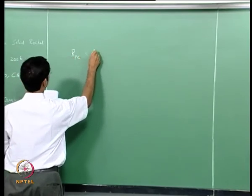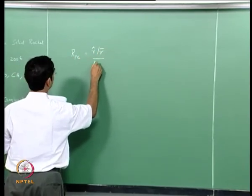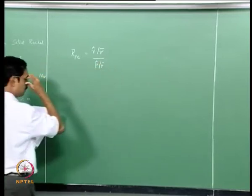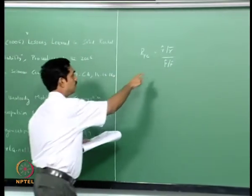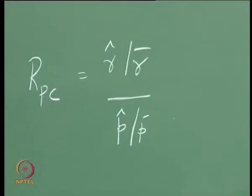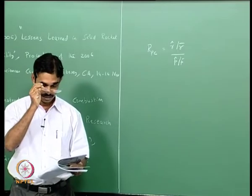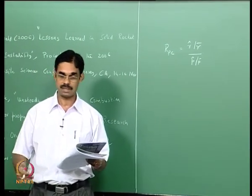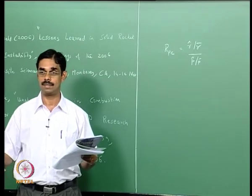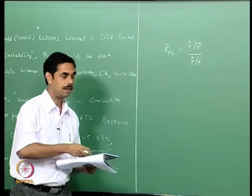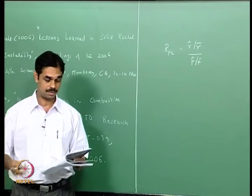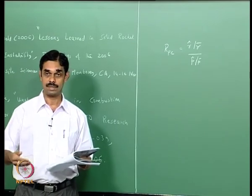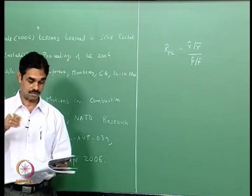The pressure coupled response R_pc equals (r-hat / r-bar) divided by (p-hat / p-bar), where r-hat is the amplitude of the burn rate oscillation, r-bar is the mean burn rate, p-hat is the acoustic pressure oscillation, and p-bar is the mean pressure. This is a function of mean burn rate, mean pressure, frequency, and other propellant properties such as additives and catalysts involved — so it is not a constant.